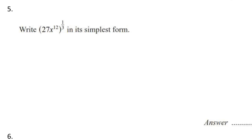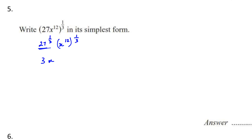Next question: write 27x to the power of 12, bracket to the power of 1 over 3, in its simplest form. We write 27 to the power of 1 over 3 and x to the power of 12 times 1 over 3. 27 to the power of 1 over 3 gives 3, and 12 multiplied by 1 over 3 gives 4. So the answer is 3x to the power of 4.